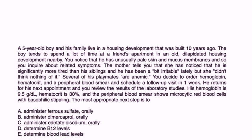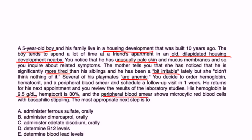Clinical vignette: A 5-year-old boy's family lives in a housing development built 10 years ago, but he spends a lot of time at a friend's apartment in an old, dilapidated housing development nearby. He has unusually pale skin and mucous membranes. His mother reports he is significantly more tired than his siblings and has been irritable. Several playmates are anemic. Lab results show hemoglobin 9.5, hematocrit 30, and a peripheral blood smear with microcytic red blood cells and basophilic stippling. With this history and these lab values, you have to think of lead poisoning — so definitely order a serum lead level.